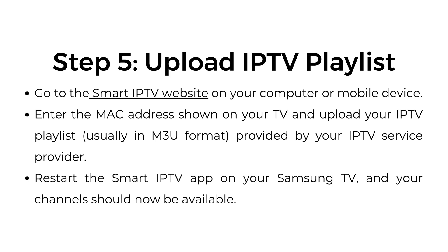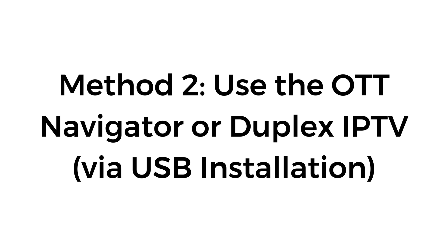Step number five, upload your IPTV playlist. Go to the Smart IPTV website on your computer or mobile device. Enter the MAC address shown on your TV and upload your IPTV playlist, usually in M3U format, provided by your IPTV service provider. Restart the Smart IPTV app on your Samsung TV and your channels should now be available.